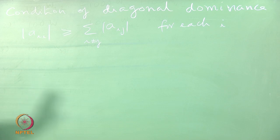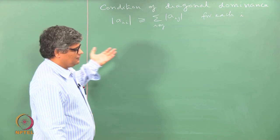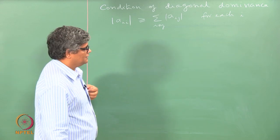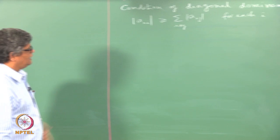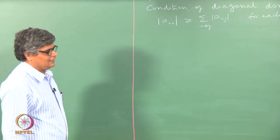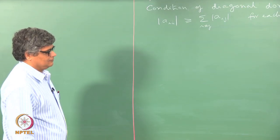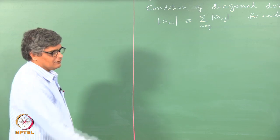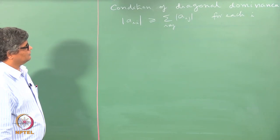If we have diagonal dominance, then we can say that is one possibility — a possible way of verifying that we have a unique set of equations, and we can make use of some efficient methods for the solution.